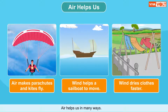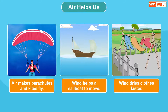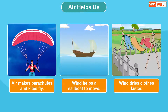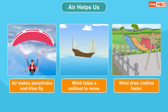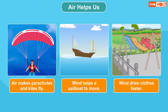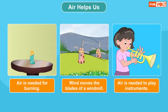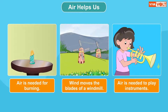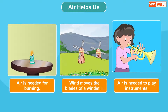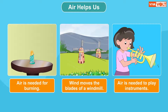Air makes parachutes and kites fly. Wind helps a sailboat to move. Wind dries clothes faster. Air is needed for burning. Wind moves the blades of a windmill. Air is needed to play instruments like flutes, trumpets and mouth organs.